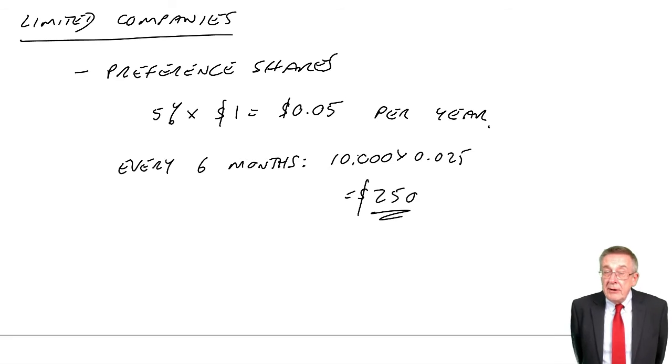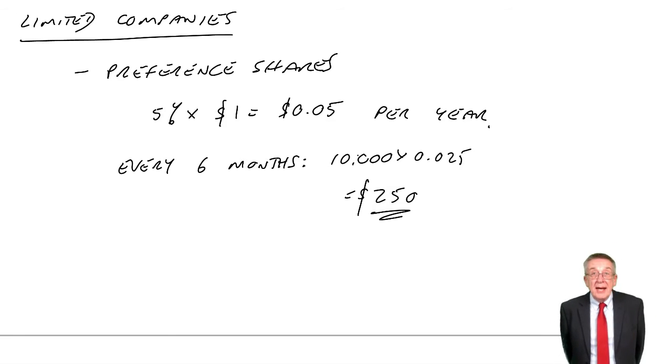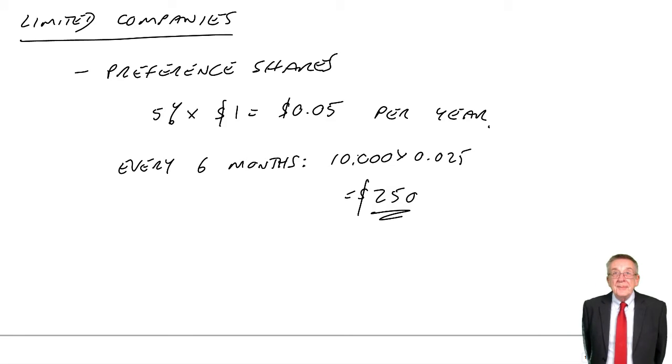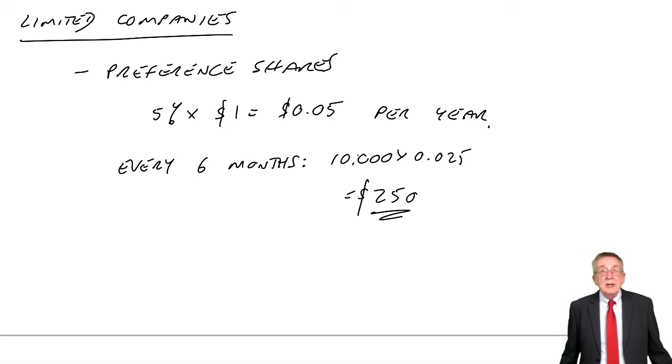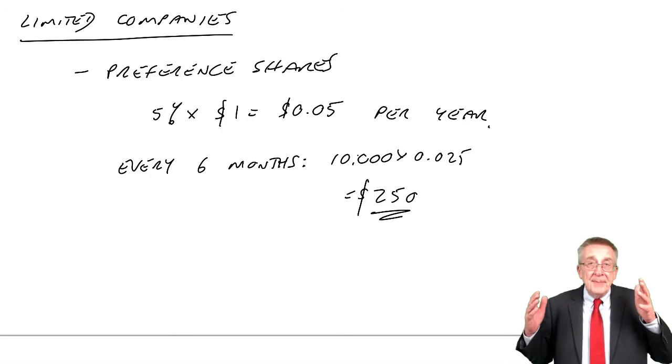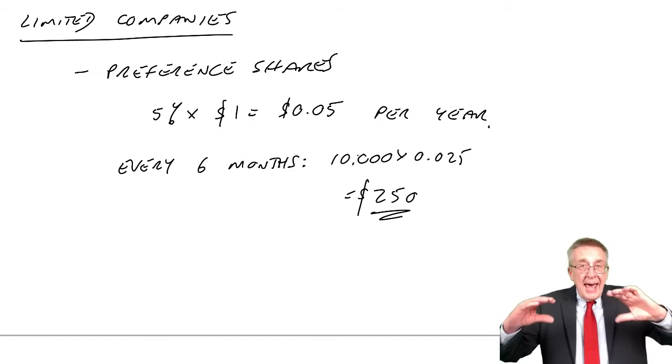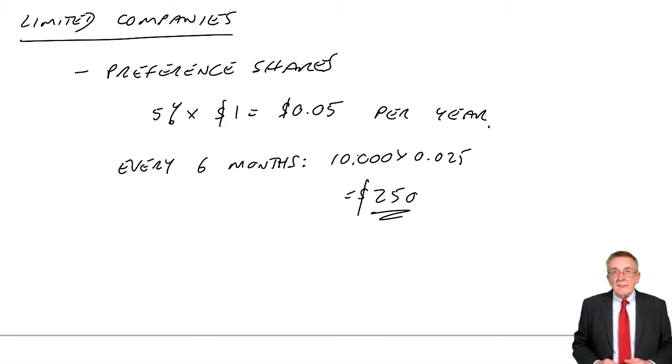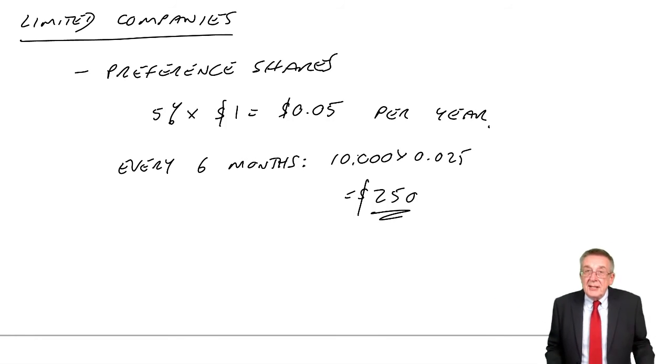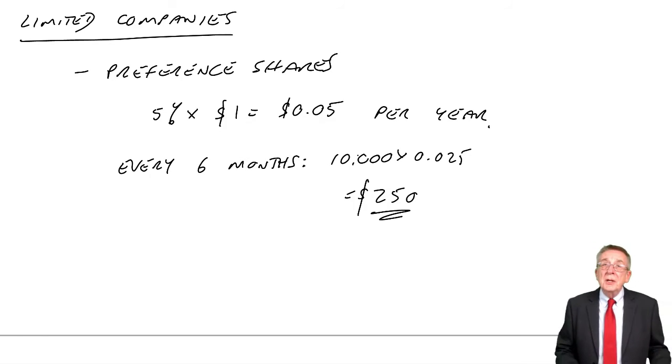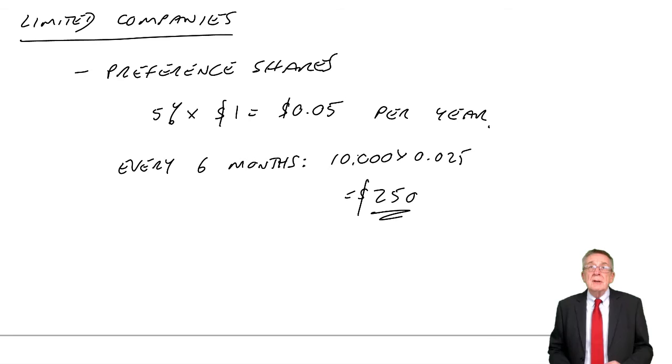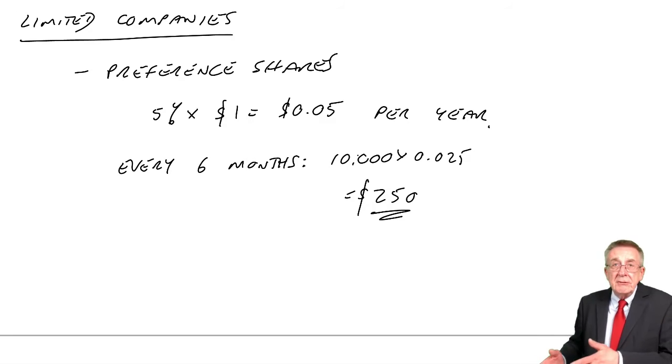On the other hand, if they're irredeemable, if they're never repayable, well, then they're treated more like ordinary shares. They're shown underneath the equity. And the dividends, just like ordinary dividends, aren't shown on the statement of profit or loss. It reduces the return to earnings.